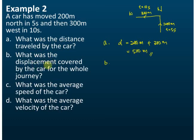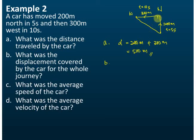How about part B? What was the displacement covered by the car for the whole journey? Displacement is the shortest distance between the end point and the initial point. This is the shortest distance, and the angle here is 90 degrees, so we can find this distance between these two points by using the Pythagorean theorem. The symbol for displacement is s.